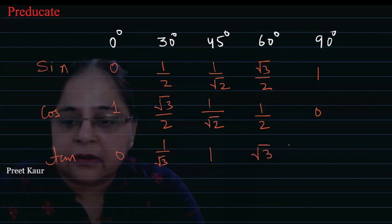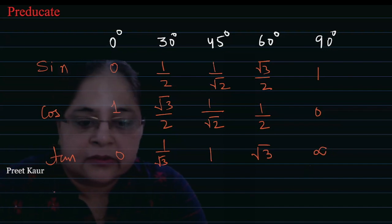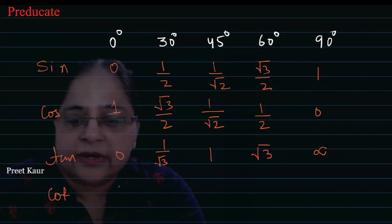And 1 upon 0 is not defined, that means tan 90 is not defined or infinite. Cot value is the reverse. Cot 0 degree is infinite, not defined.